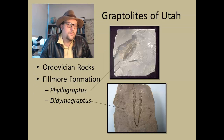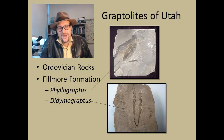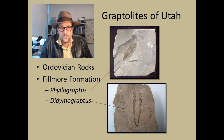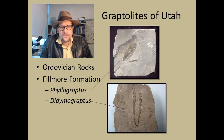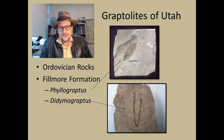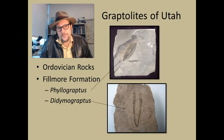Here in Utah we have some Ordovician rocks, and two common graptolites define the Ordovician rocks in Utah in the Fillmore Formation. This is Phyllograftius, which is a leaf-shaped graptolite, and the one that is a little bit more common is Didymograptus, which is a doubled graptolite — it kind of looks like a tuning fork, with two branches coming off of it.